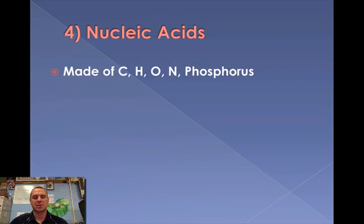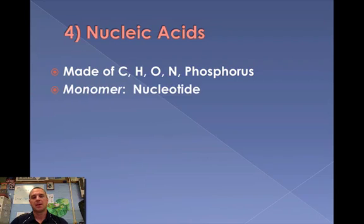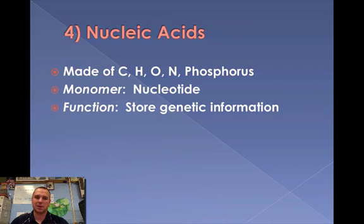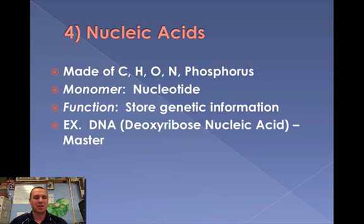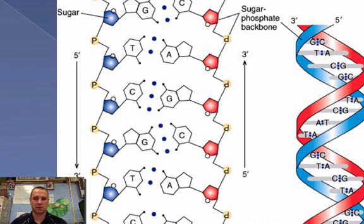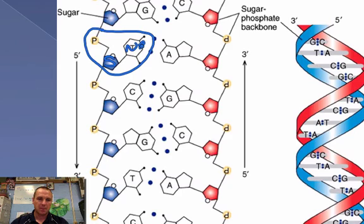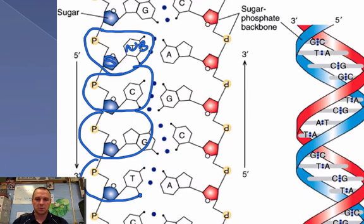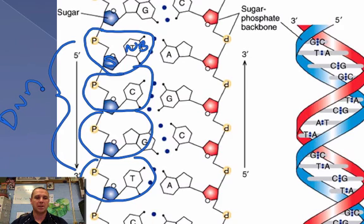The last organic molecule is a nucleic acid. It's made up of carbon, hydrogen, oxygen, and nitrogen — notice once again there's that CHO backbone. The monomer is a nucleotide. A nucleic acid stores genetic information — it's probably the most important organic molecule because it's how we pass on what we are to the next generation. Examples are DNA (deoxyribose nucleic acid) and RNA (ribose nucleic acid). A nucleotide is made up of a phosphate, a sugar, and a nitrogen base. When many nucleotides are added together, they build the DNA molecule.